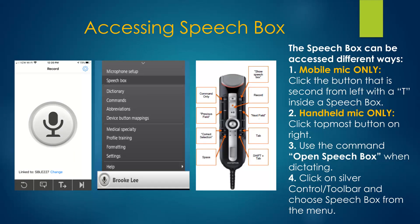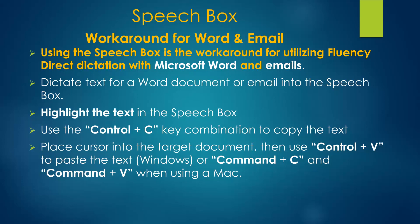There are several ways to open the speech box. On a mobile device, click on the button with a word balloon. With the Olympus mics, press the uppermost button on the right. While dictating, utter the command Open Speech Box, or you can click on the silver control toolbar and select Speech Box from the menu.